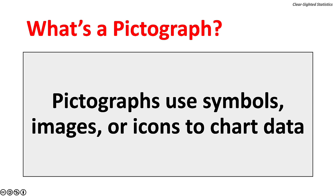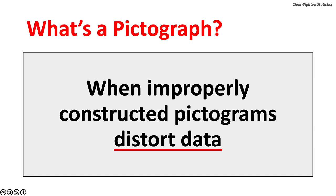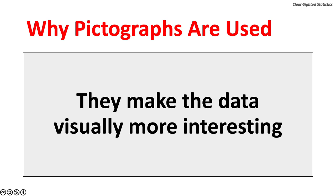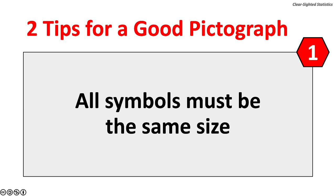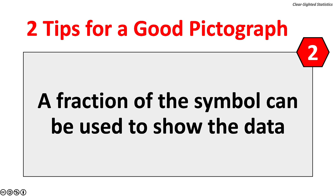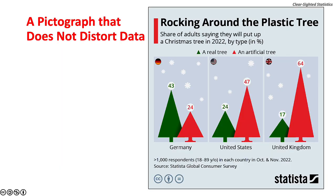A brief note on pictographs. Pictographs, or pictograms, use symbols, images, or icons to chart data. When properly constructed, pictograms do not distort data; when improperly constructed, they do. They make data visually more interesting and may make it easier to understand. Two tips: all symbols must be the same size, and a fraction of the symbol can be used to show partial data. Here is a very distorted pictograph — the icon for Burger King has nine times the volume of Starbucks's icon, yet its sales are only three times that of Starbucks. By contrast, a Statistica pictograph on the use of plastic and natural Christmas trees is excellent because the images do not distort the data.